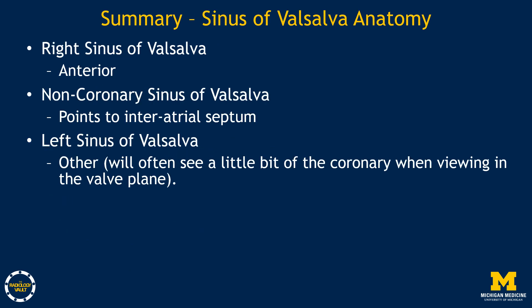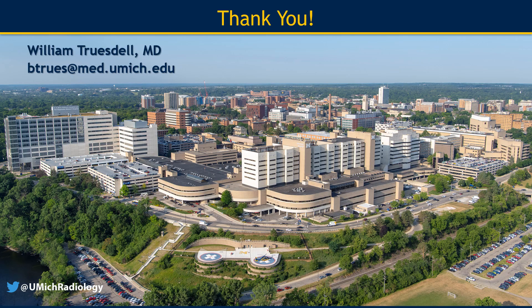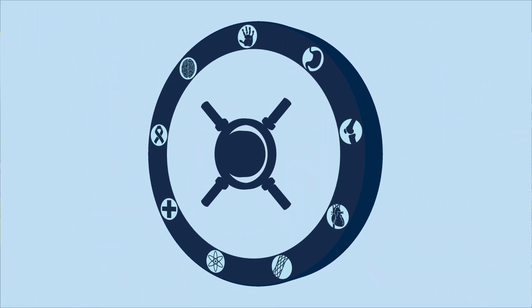Finally, reviewing sinus of Valsalva anatomy: there are typically three sinuses labeled right, left, and non-coronary based on the coronary artery that arises from them. Key landmarks are that the right sinus points anteriorly, the non-coronary sinus points to the interatrial septum, and the remaining sinus is the left. The key is finding your anatomic landmarks and identifying anterior versus posterior and which chambers are the atria. If you can remember the anatomy discussed in this video, you will be well on your way to reviewing cardiac CTs. Thank you.